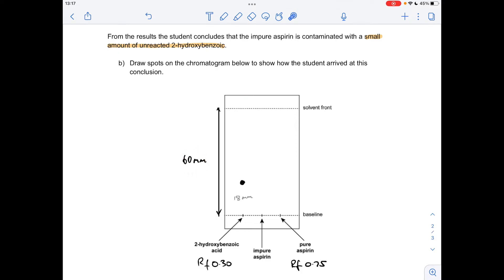For the 2-hydroxybenzoic acid with its RF value of 0.3, I've multiplied that by the total distance, getting 18. So I draw the spot for 2-hydroxybenzoic acid 18 millimeters from the baseline. Likewise for the pure aspirin spot, I've got a distance of 45 millimeters from the baseline. That comes from the RF value multiplied by the total distance.